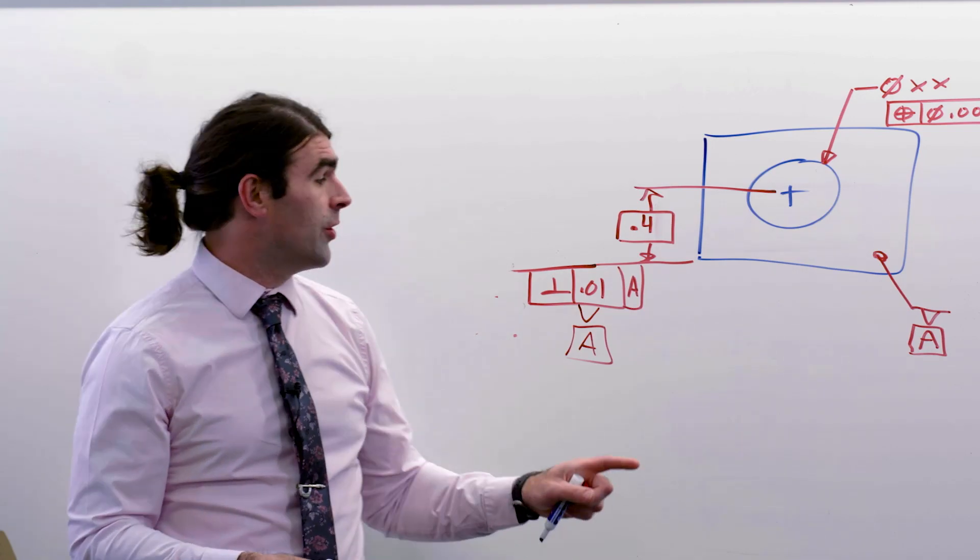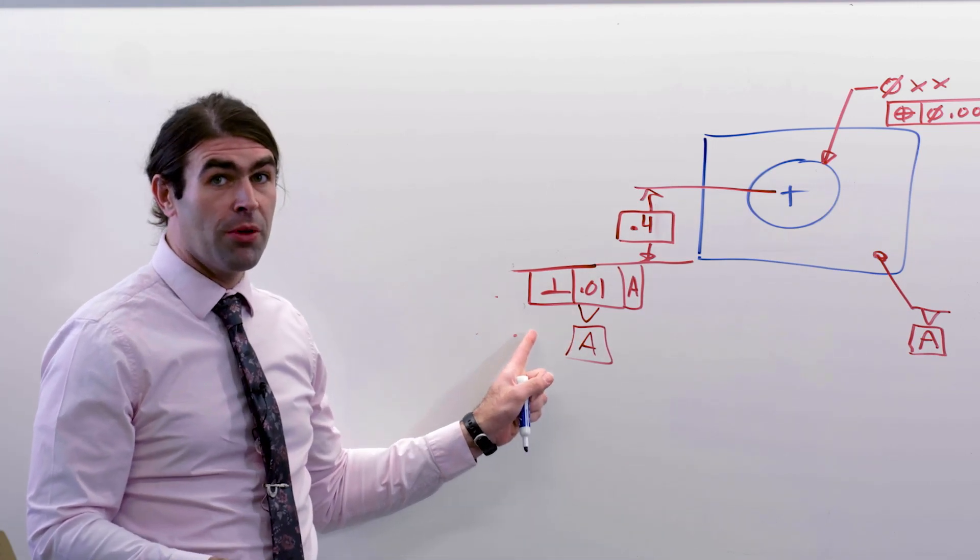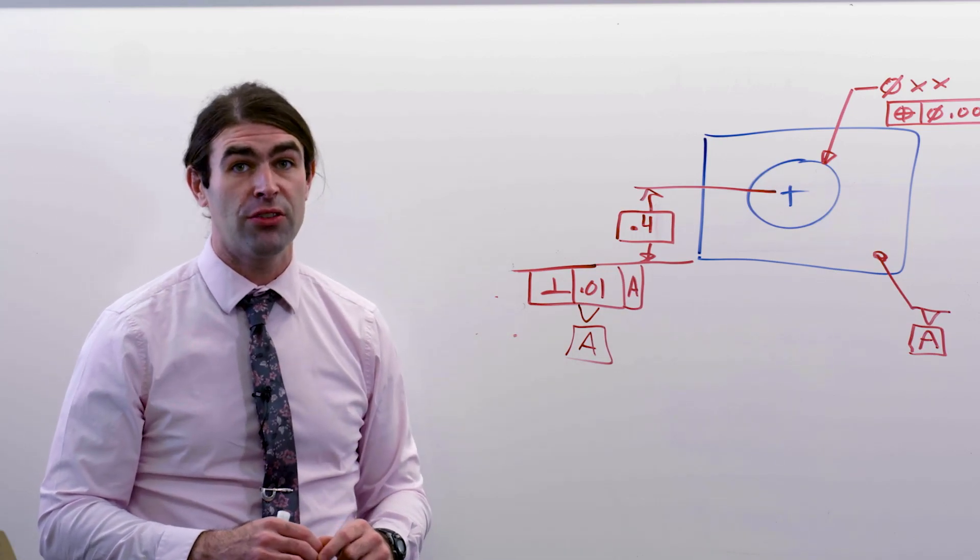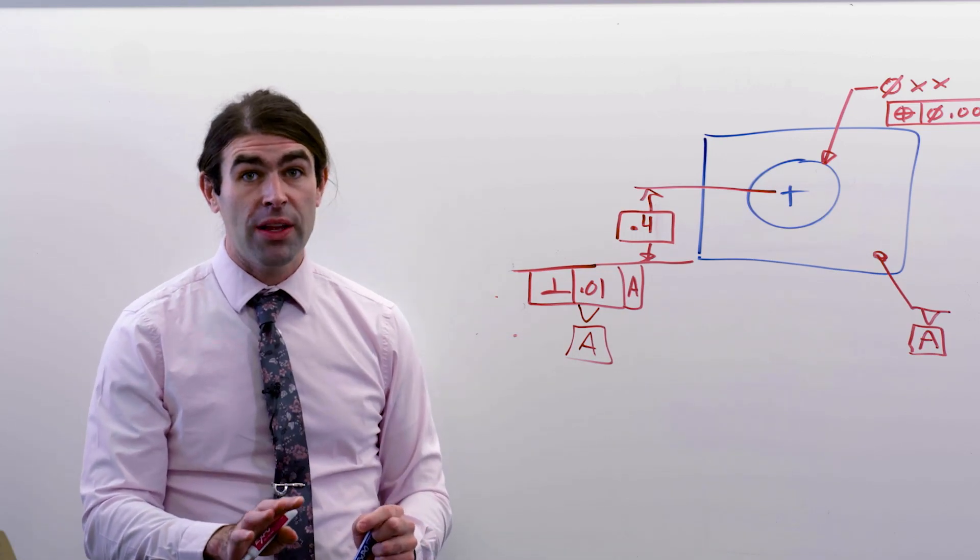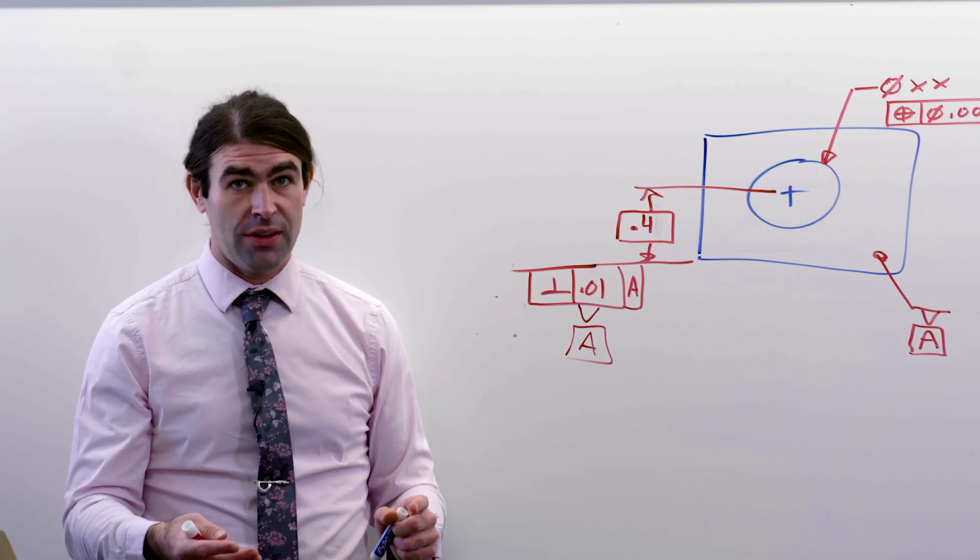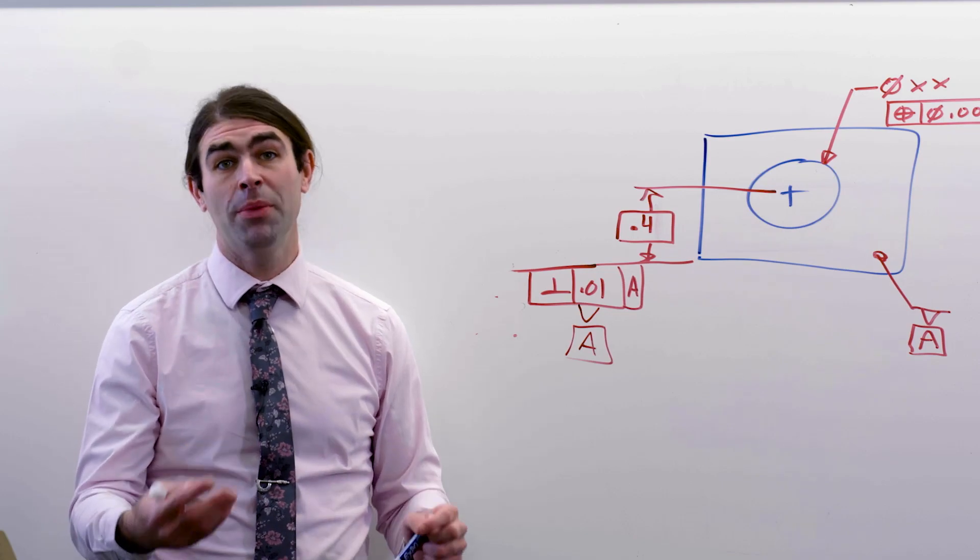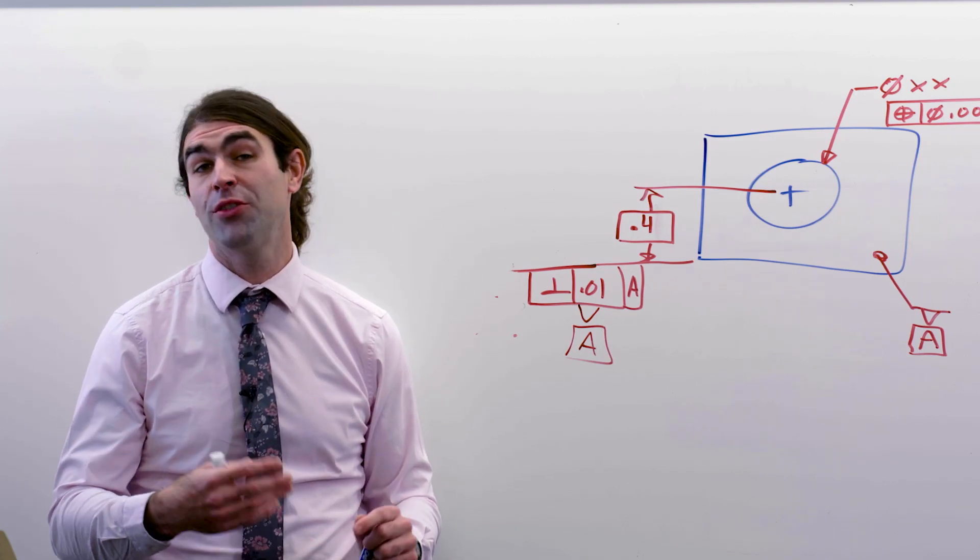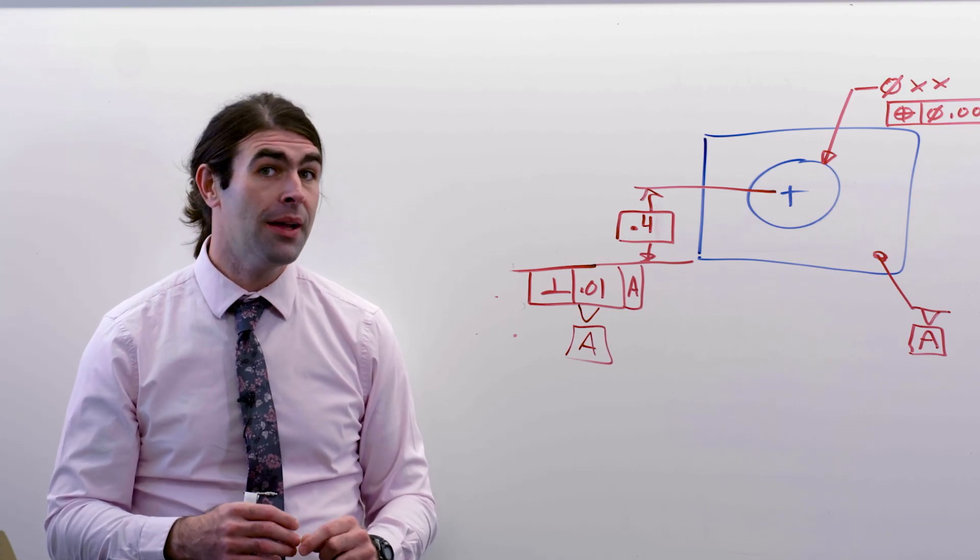Now, with the newer system, when you can put a datum feature symbol on any feature control frame, now you have to think about what is a feature of size. And it's not always just that it's a surface. You could have a profile tolerance, have a material condition now, and that's a new thing in the 2009 standard.